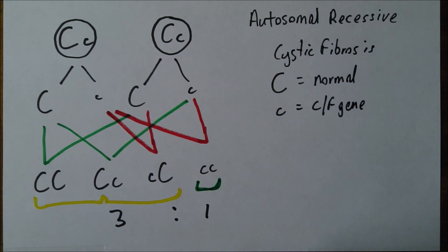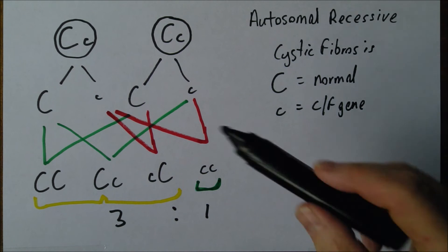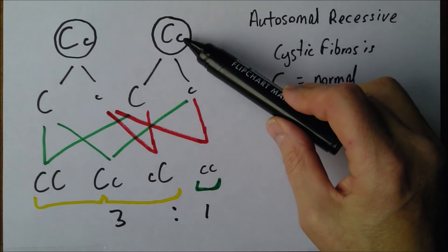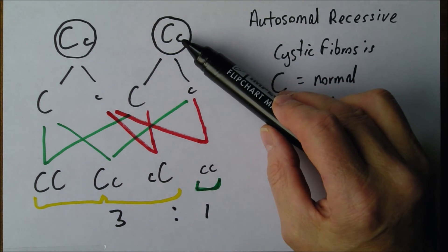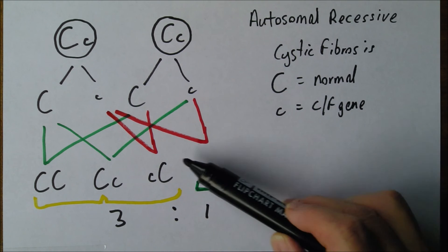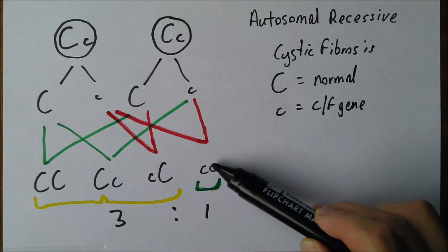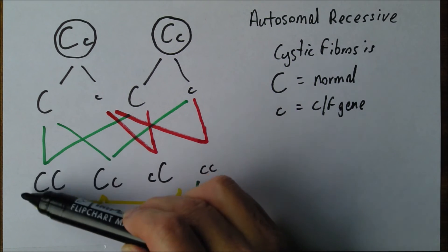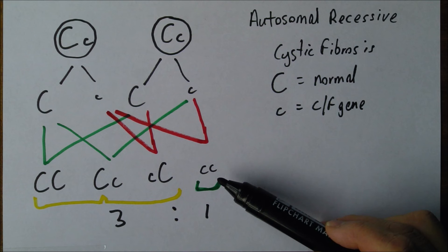If we're advising parents who are genotypically heterozygous - and there are tests available for this - we could tell them there's a 1 in 4 chance that any individual child would suffer from cystic fibrosis.